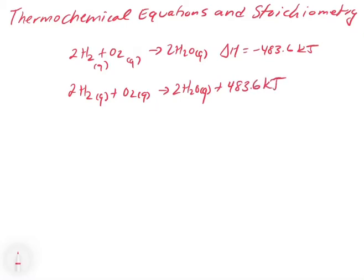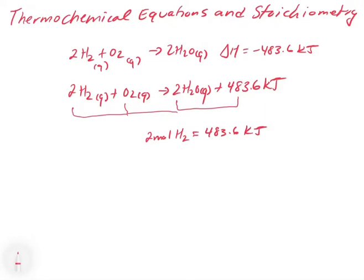I can say that one of my products is going to be 483.6 kilojoules. So we can now relate this 483.6 kilojoules to any one of the stoichiometric coefficients. I know that for every 2 moles of H₂, I'm going to get 483.6 kilojoules, or I should say minus 483.6 kilojoules.